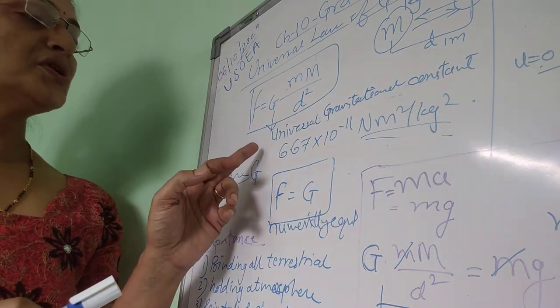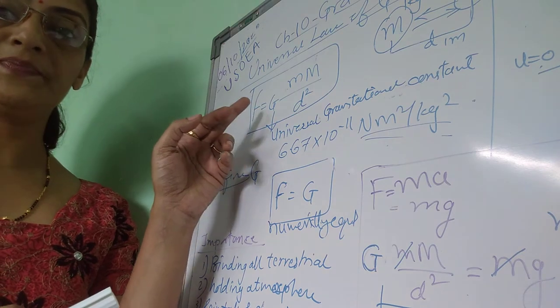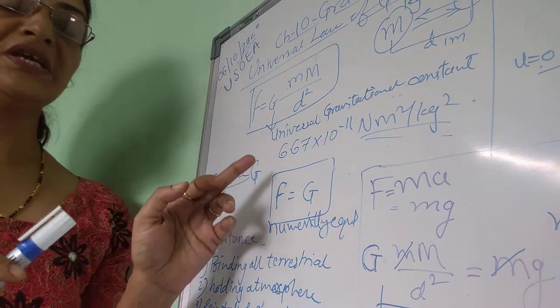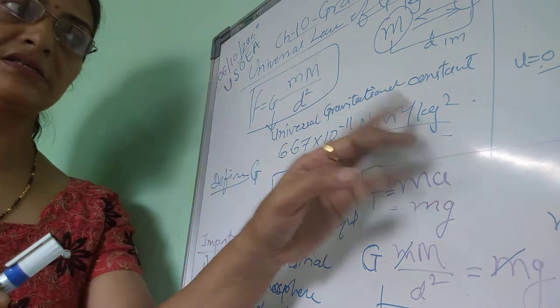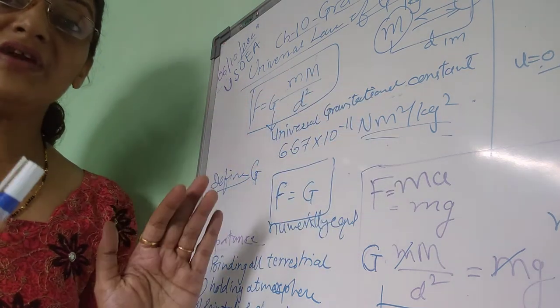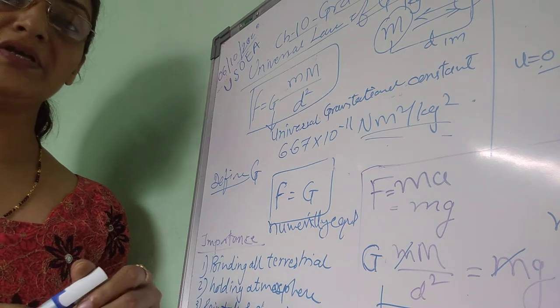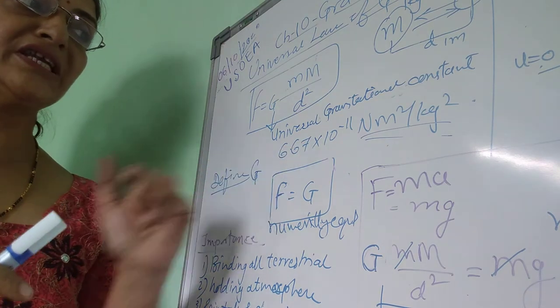If the question asked is 'what is capital G?', you have to say it is the universal gravitational constant whose value is this. But if it is asked to define it, to find out its definition, we proceed differently.